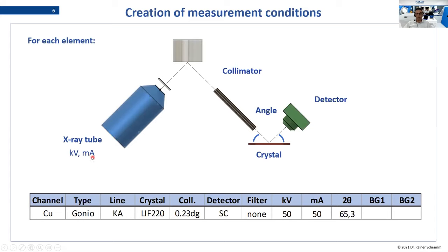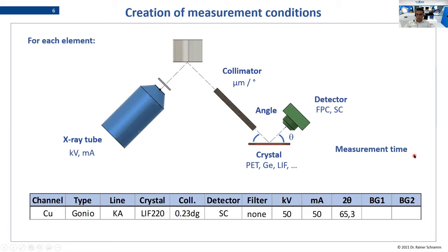Now we have to talk about the parameters we need to adjust. On the tube side it's the voltage and the milliamps. On the collimator side it's the distance of the blades — how much radiation you want to let through. Then of course the crystal, which has to correspond to the wavelengths you want to reflect to the detector. Then we have the angle used for the reflection, and of course the detector type. We also need to define the measurement time — how long you keep that arrangement and register your intensity as counts. The atmosphere — vacuum or helium — also influences your measurement result.